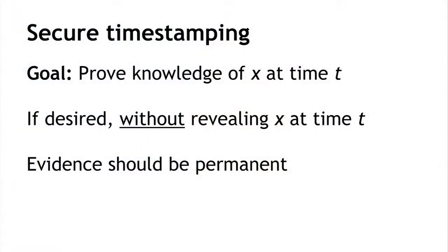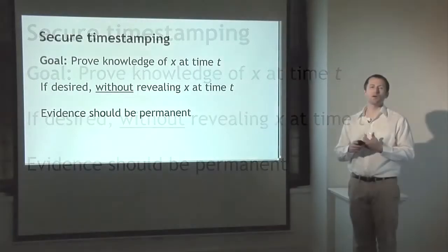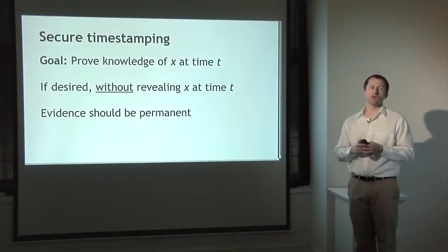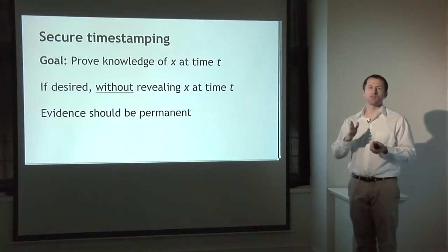Using this, we'd like to build secure timestamping. The goal is that we want to be able to prove that we know some value x at a specific time t — no later than time t. Oftentimes we're going to want to prove that we know what x is without actually revealing it at time t, but revealing it later, and we want the evidence to be permanent — a permanent record that we knew some information x at time t that nobody can ever destroy after the fact.